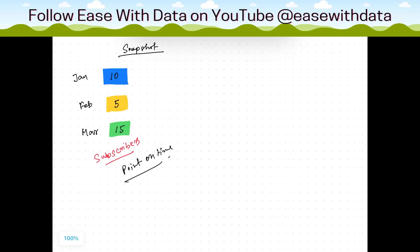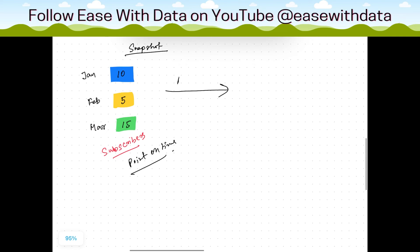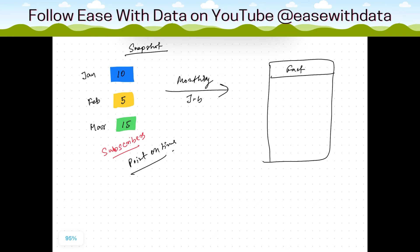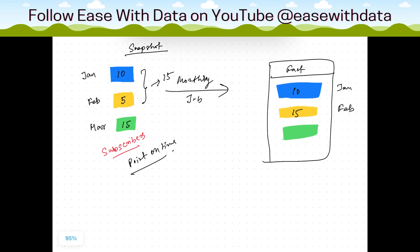On January you got 10 subscribers, on February you got 5 subscribers, and on March you got 15 subscribers. Consider this is monthly data and your monthly job runs. When the January data gets loaded, we'll have 10 subscribers. In February, we'll have a periodic snapshot of 15, which is January 10 plus February 5. On March, we'll have 30, which is 15 from February plus 15 from March.